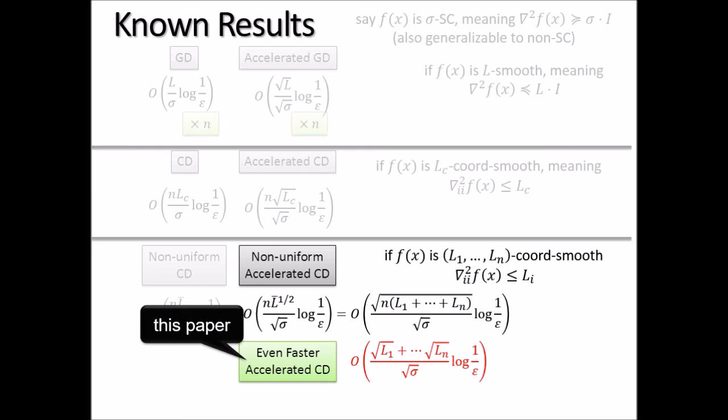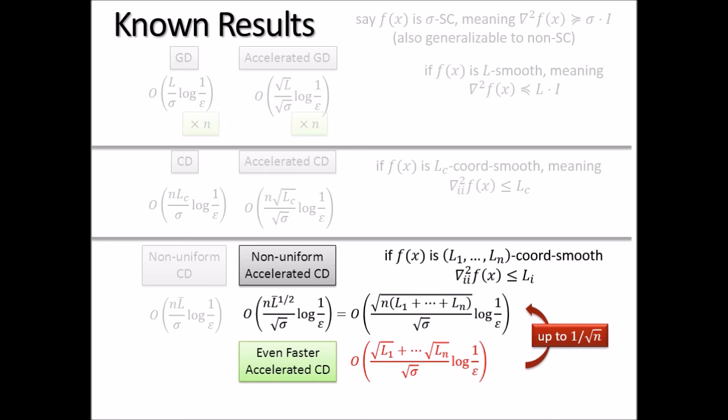For instance, if all but one L_i is near zero and only one is large, the sum of square roots is much smaller than n times the average. This gives an even faster accelerated convergence rate. That is our contribution at a high level. Let me quickly mention applications for why non-uniform coordinate smoothness is interesting: in ERM dual problems such as classification, the coordinate smoothness of the dual objective is proportional to the norm of the i-th feature vector, which varies across NLP datasets.